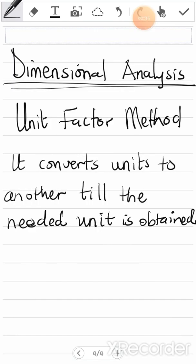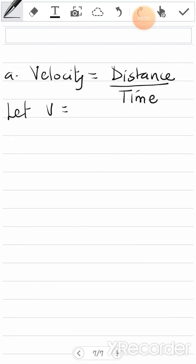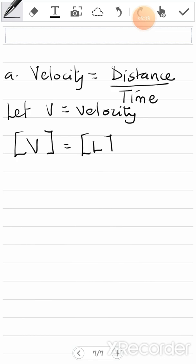Now, to dimensional analysis itself — in physics, you mostly have to add the unit or the SI unit for a given quantity. This is a step-by-step procedure that helps you know what unit to use. Length, breadth, width, height, distance, and displacement are all represented as capital L. Time is capital T, and mass is capital M. We write them in brackets. For example, velocity is distance over time, which gives us LT⁻¹.